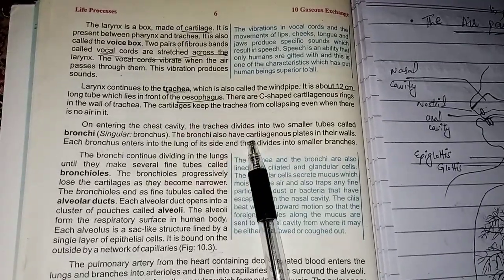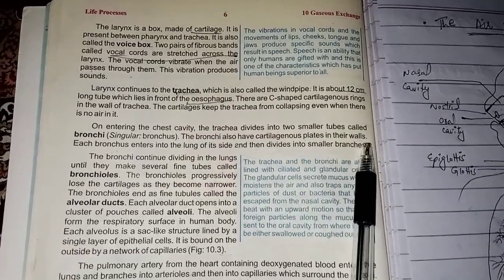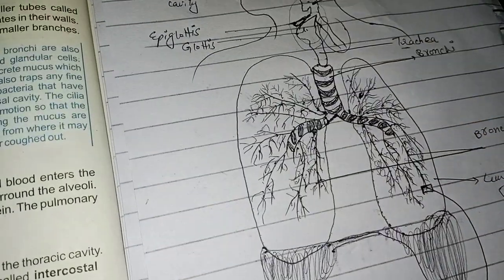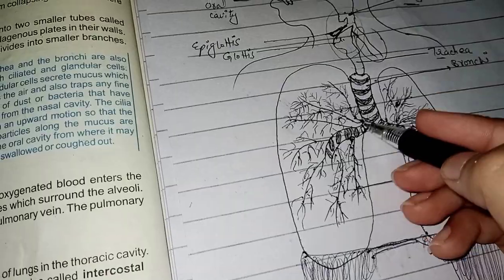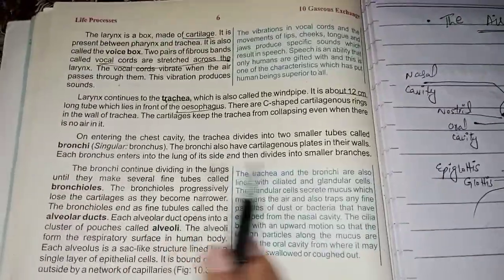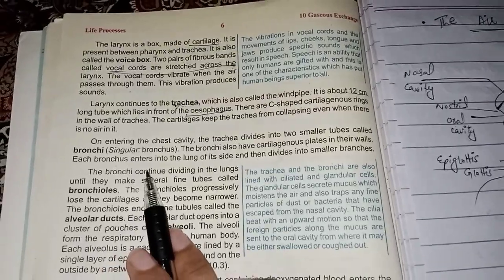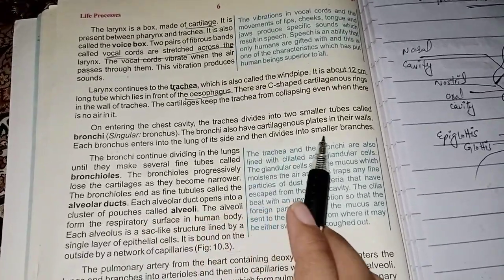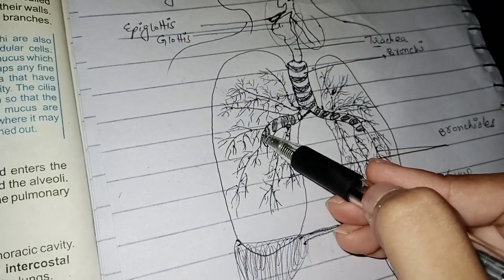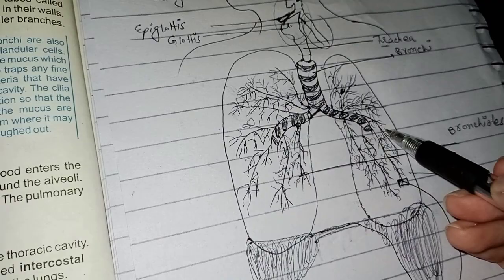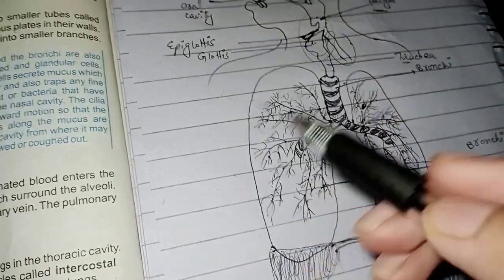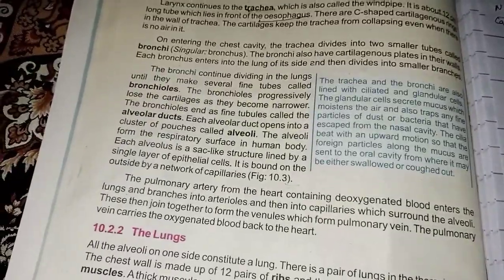The bronchi also have cartilaginous plates in their walls. Each bronchus enters the lung on its respective side and then divides into smaller branches. These smaller branches form the bronchi within the lungs.